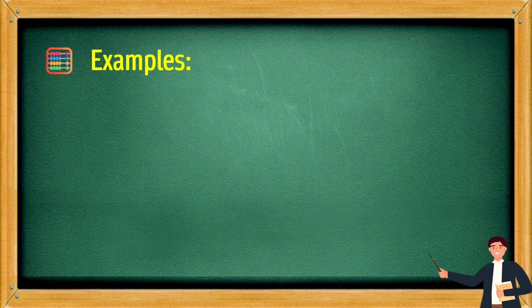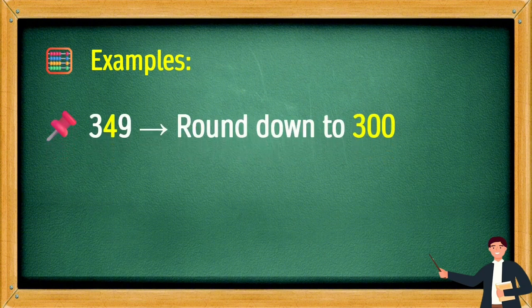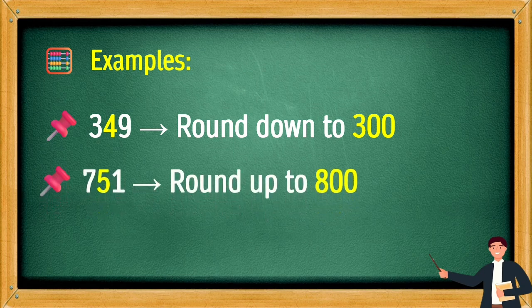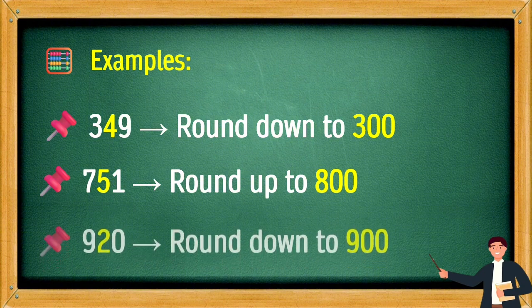Example number 3. 349, round down to 300. 751, round up to 800. 920, round down to 900.